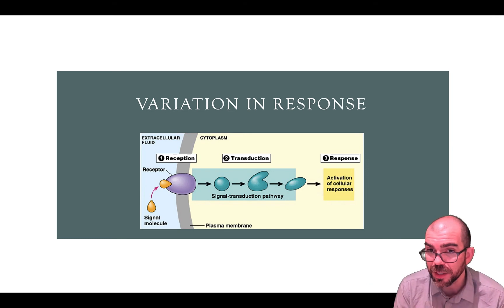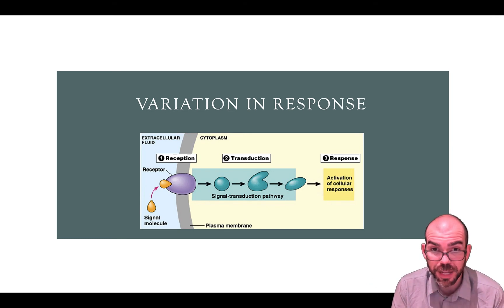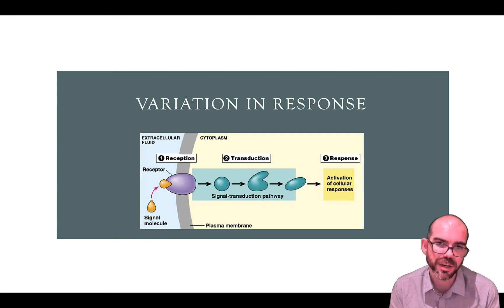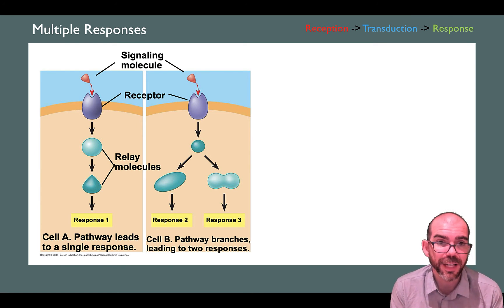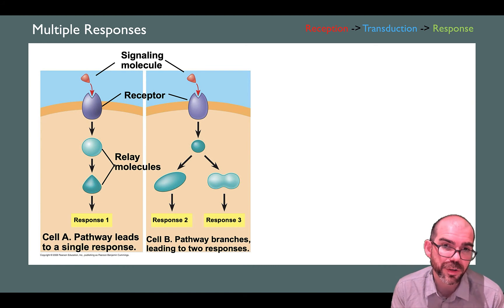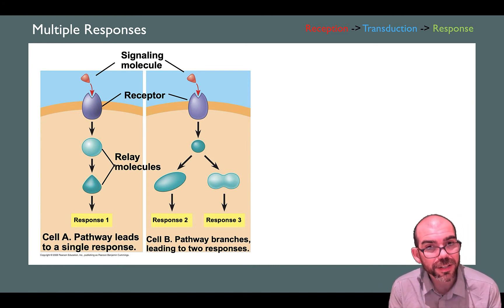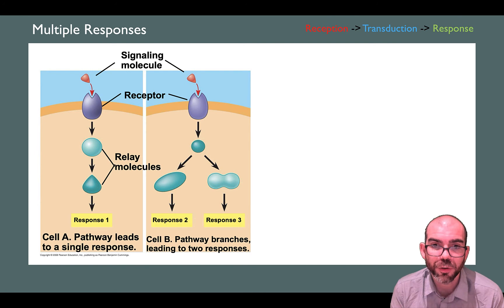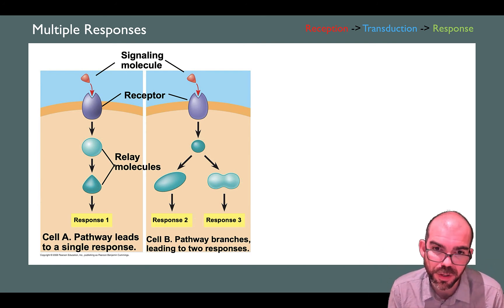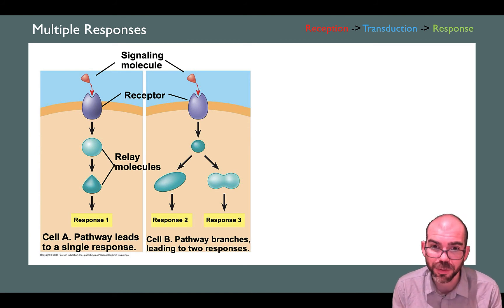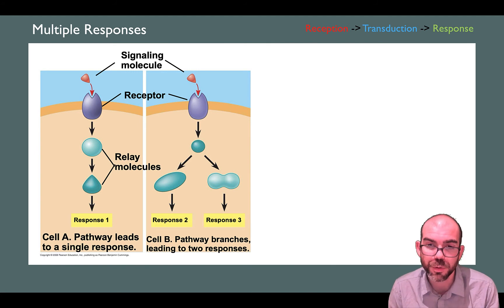We've seen variation in reception and transduction — let's now look at variation in responses. A typical response has a ligand going to a receptor, causing transduction, and producing one response. But you can have a scenario where the signaling molecule triggers transduction to branch out and cause different responses — branching pathways for one hormone or molecule to trigger various responses in the cell.